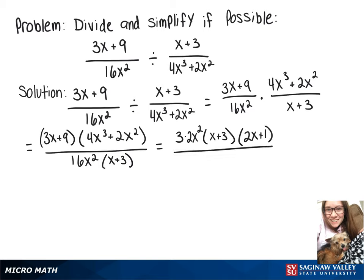Now on the bottom I'm going to rewrite that 16x squared as 8 times 2x squared and then we still have our x plus 3. And now we can rewrite this as 2x squared over 2x squared times x plus 3 over x plus 3 times 3 times 2x plus 1 over 8.